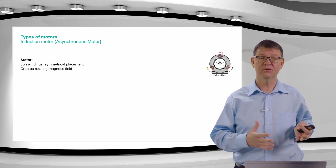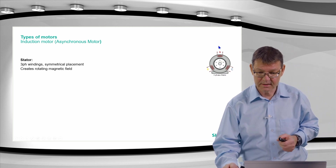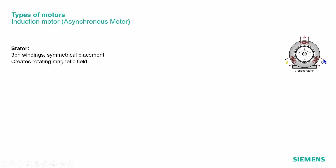For the asynchronous or induction motor, we have a stator with three windings for the three phases, arranged symmetrically. We have a sine curve voltage on each of these phases which induces a current. This current creates a field, and each winding creates a dynamic alternating field. The combination of all three fields gives a rotating magnetic field with a constant amplitude, rotating at the grid frequency.